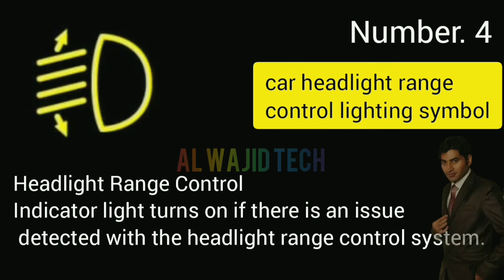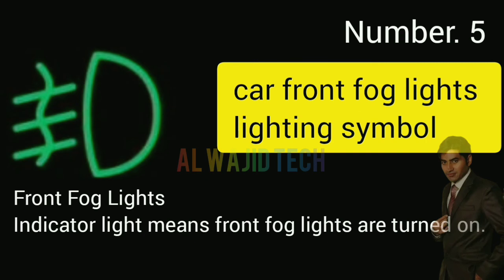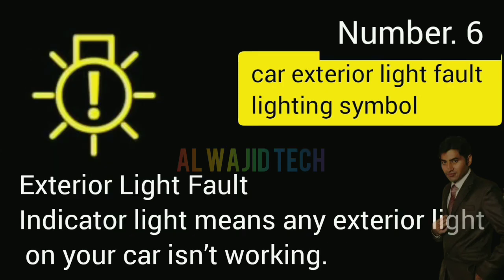Number four: Car headlight range control indicator turns on if an issue is detected with the headlight range control system. Number five: Car front fog lights indicator means front fog lights are turned on. Number six: Car exterior light indicator means any exterior light on your car is not working.